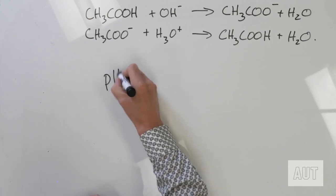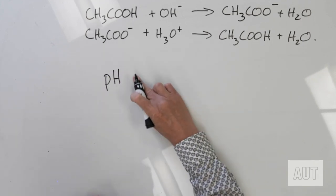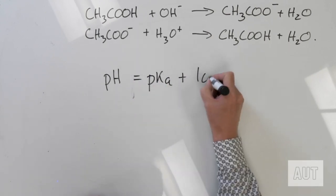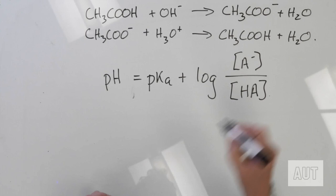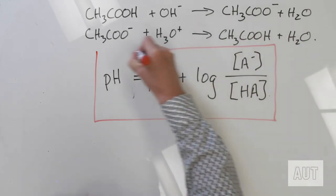For example, the acetate buffer will buffer at around about pH 4.7, so anywhere between pH 3.7 to 5.7 will be the buffering range for an acetate buffer. So how do we calculate the pH of a buffer solution? Here is the important equation: pH is equal to pKa plus log of the conjugate base concentration over the concentration of the weak acid. That's an important equation — it gets a red box. That is one you need to learn.